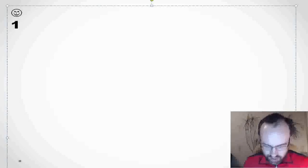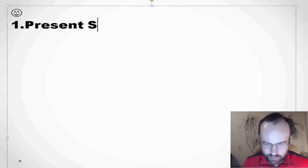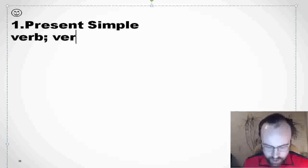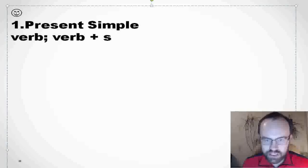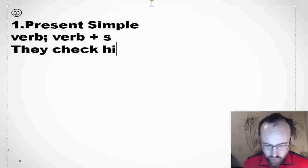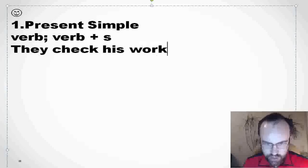The first tense is present simple. Do you remember how we form it? Verb, or verb plus S if it's he, she, or it. For example: they check his work.